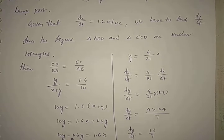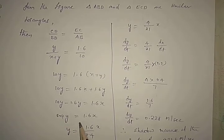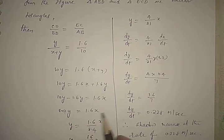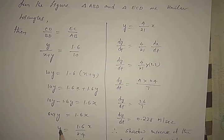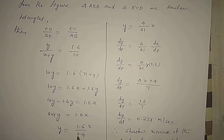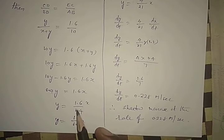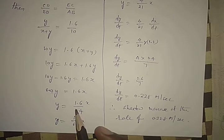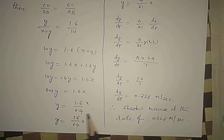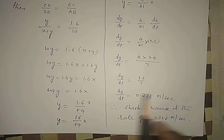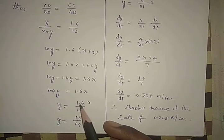So Y = 1.6/8.4 · X. To simplify, multiply numerator and denominator by 10 to get 16/84. Cancelling by 4 gives 4/21. So Y = 4/21 · X.